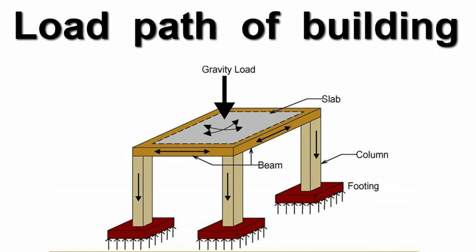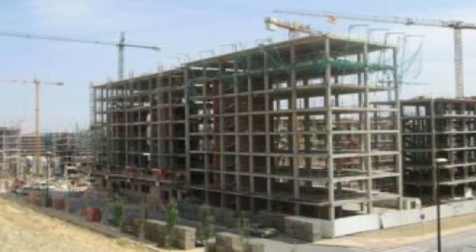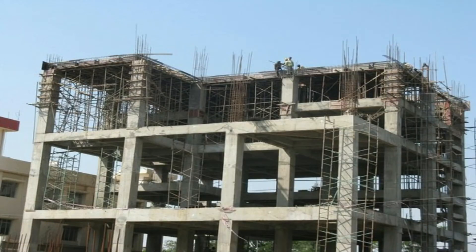Let's see how loads flow through a building. Multiple elements are used to transmit and resist external loads within a building. These elements define the mechanism of load transfer in a building, known as the load path.